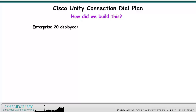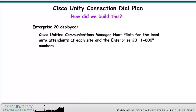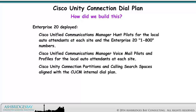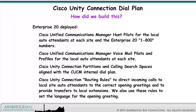Enterprise 20 deployed Cisco Unified Communication Manager hunt pilots for the local auto-attendants at each site and the Enterprise 20 1-800 numbers, voicemail pilots and profiles for the local auto-attendants at each site, Cisco Unity Connection partitions and calling search spaces aligned with the CUCM internal dial plan, and Cisco Unity Connection routing rules to direct incoming calls to local site auto-attendants to the correct opening greetings and to provide transfers to local extensions. We also use these rules to set the language for the opening greeting.